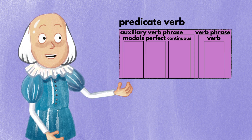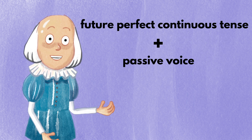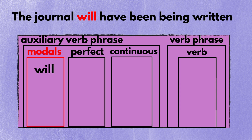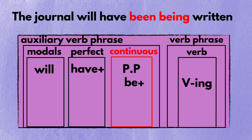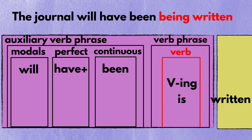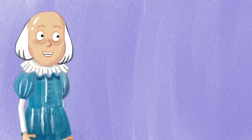Now let's see what happens if I stack together all the parts within the predicate verb, by analyzing the example phrase the journal will have been being written. The phrase is in the future perfect continuous tense with the passive voice. First, because the phrase is in the future tense, put will in the modals. Next, since it has a perfect tense, put have plus pp in the perfect. Next, since it has a continuous tense, put be plus ing in the continuous — since the word be comes right after have, it changes to its pp form been. Next is the passive voice — since the journal is receiving the action of writing, put be plus pp in the verb, as in is written. Since is comes right after been, it changes to its ing form being. That is how we got the journal will have been being written.